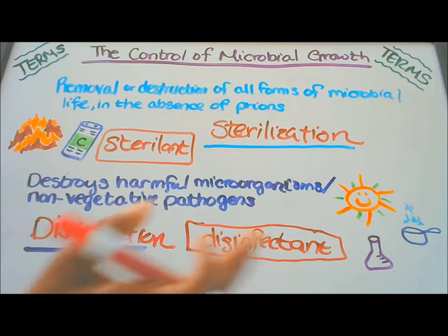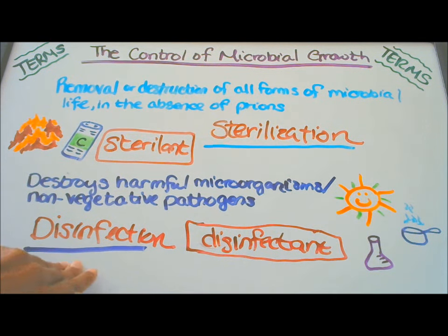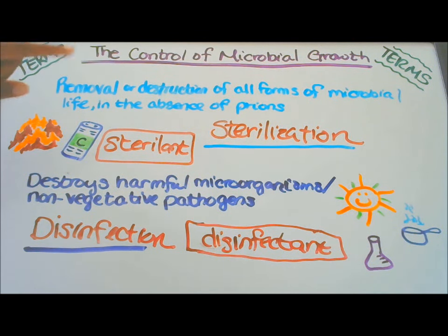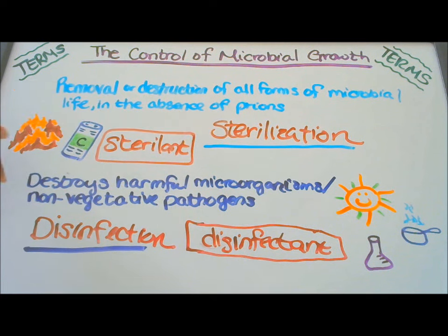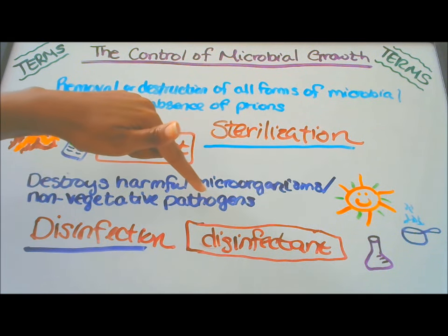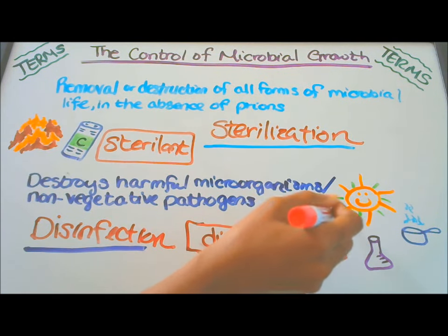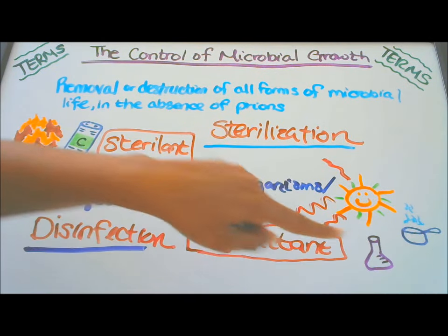Here I have pictures to help you remember what sterilization and disinfection mean. Sterilization is the removal or destruction of all forms of microbial life, using heat to kill microbes — think commercial sterilization, canned foods. Disinfection destroys harmful microorganisms and non-vegetative pathogens using UV rays, boiling water, and chemicals.